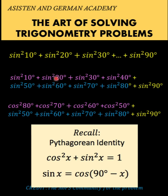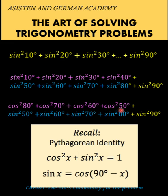Similarly, sine squared 20 degrees becomes cosine squared 70 degrees. Sine squared 30 degrees becomes cosine squared 60 degrees. And sine squared 40 degrees becomes cosine squared 50 degrees. All the remaining terms are just copied as they are.